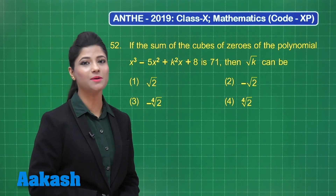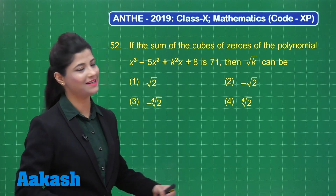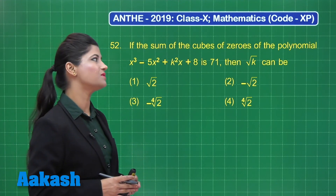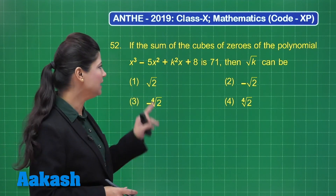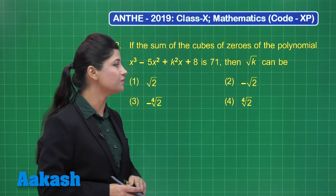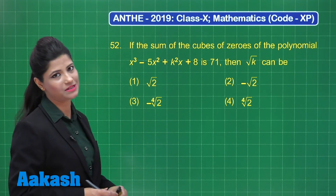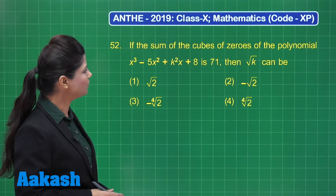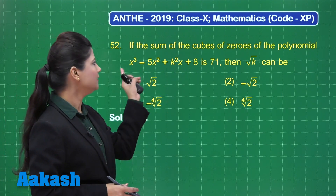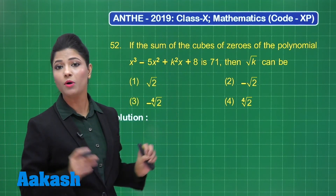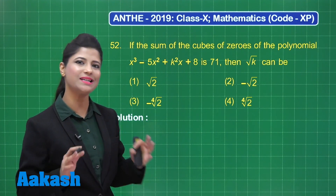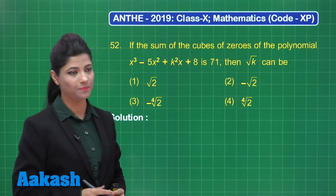Let us take up question number 52. It states that if the sum of the cubes of zeros of the given polynomial is 71, then what is the square root of k out of the given options. When we talk about the zeros of the polynomial, this is a cubic polynomial so it will have three zeros. Let us consider they are alpha, beta, and gamma.